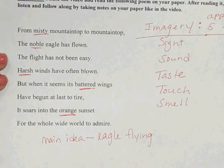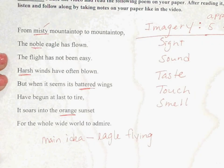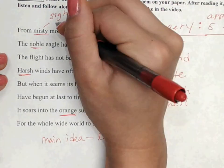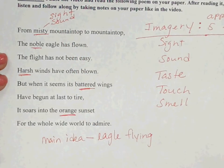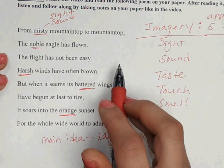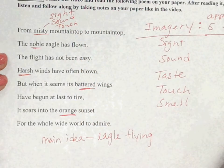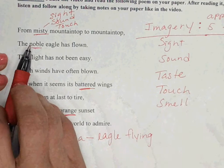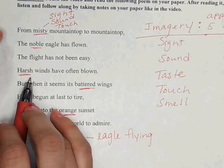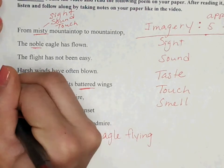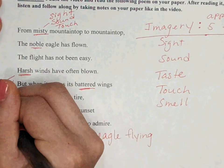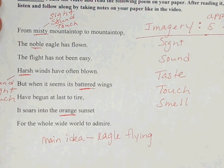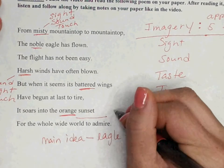Now that we have found our descriptive words, let's see which senses they connect to. Misty could be sight because you can see mist, or touch since it's on the mountain top. Harsh winds could be sound, sight, or touch. Orange sunset is definitely sight.